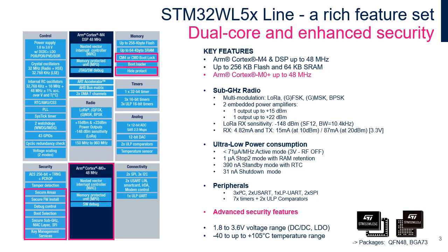The block diagram for dual-core STM32WL5 devices is provided here for reference. The dual-core STM32WL5 product line inherits the full list of features of the single-core STM32WLE and provides users with additional advanced security features such as hardware isolation between ARM Cortex-M4 and M0+ cores, six security domains, key management services, secure boot, secure firmware update, and secure debug control.